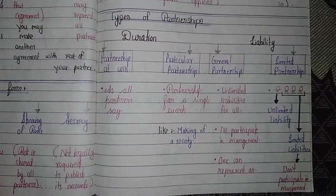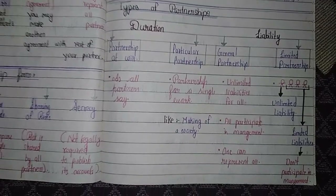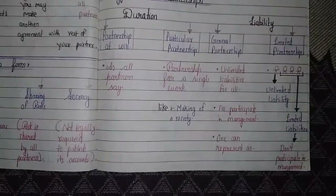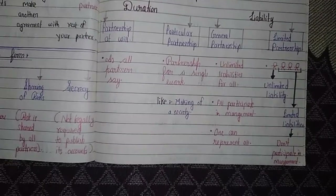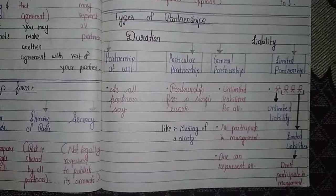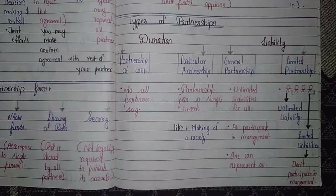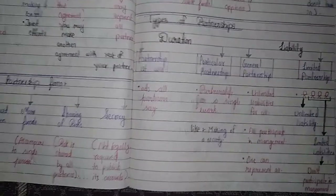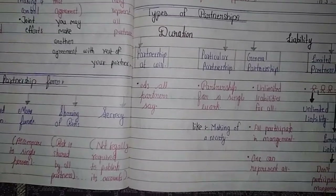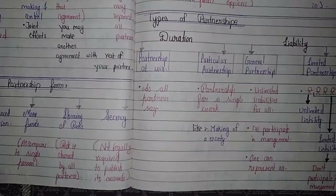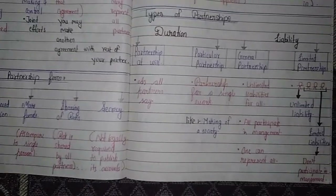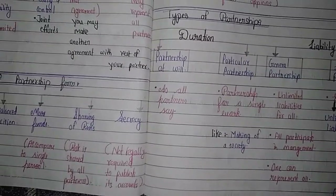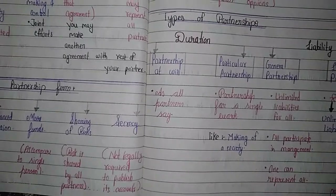Particular partnership is one where you form a partnership to complete a single task or work, such as the construction of a house or a society. Partnership at will means you and your partner can open a business whenever you wish, and can also close the business whenever you both agree — it all depends on the will of the partners.